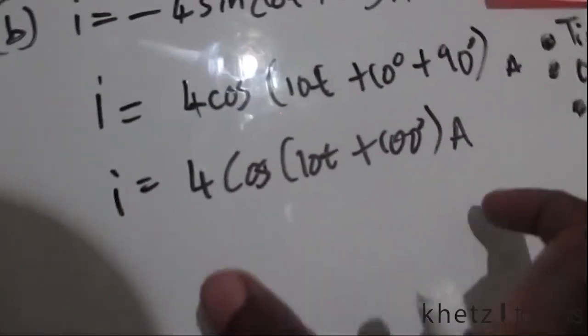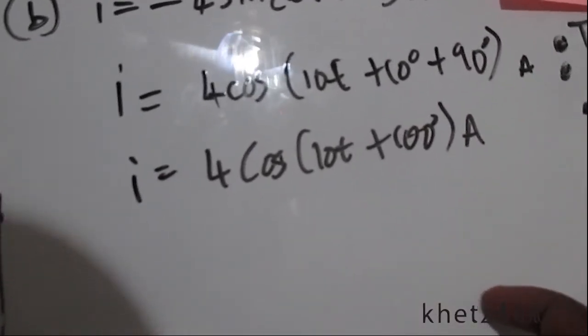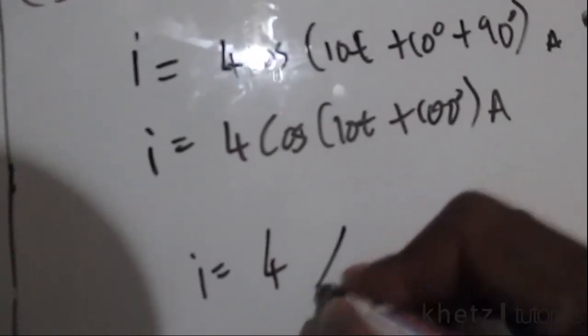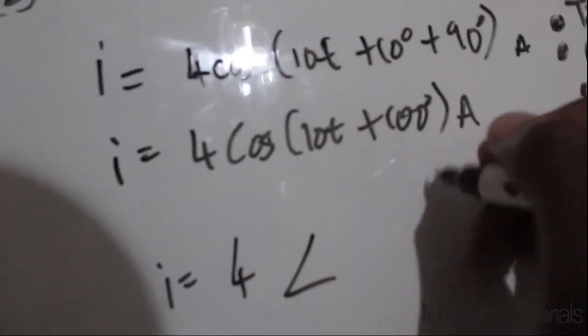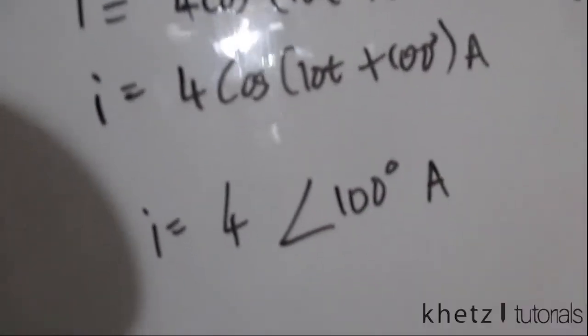To transform this into a phasor, we do the same thing as we did in part a. Just take the amplitude, so i equals 4. Now we input the angle which is 100 degrees, not forgetting the units.